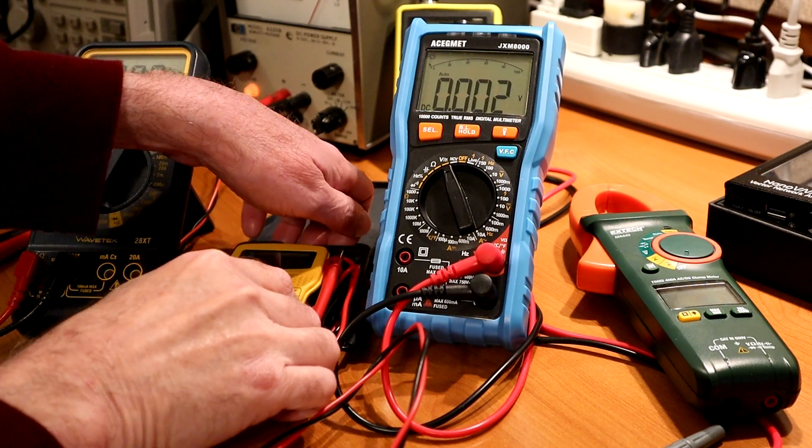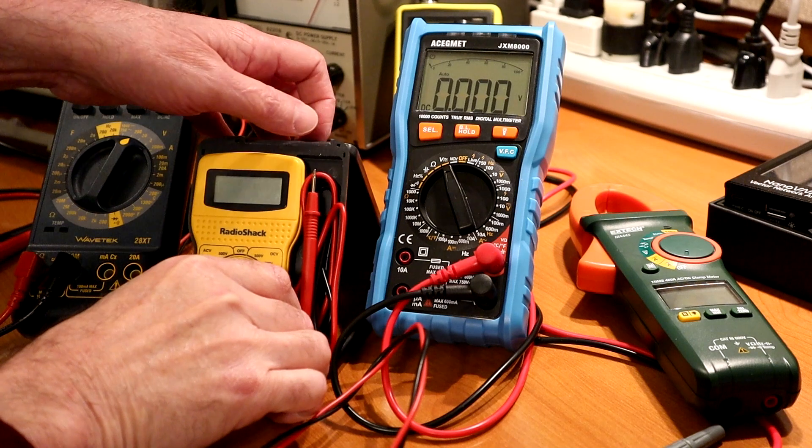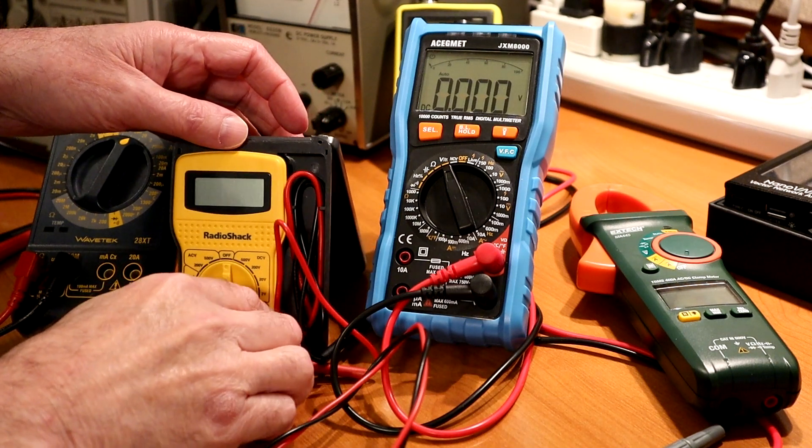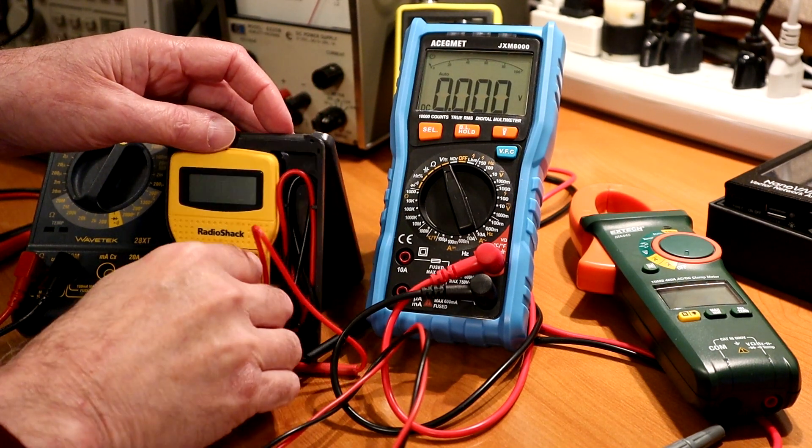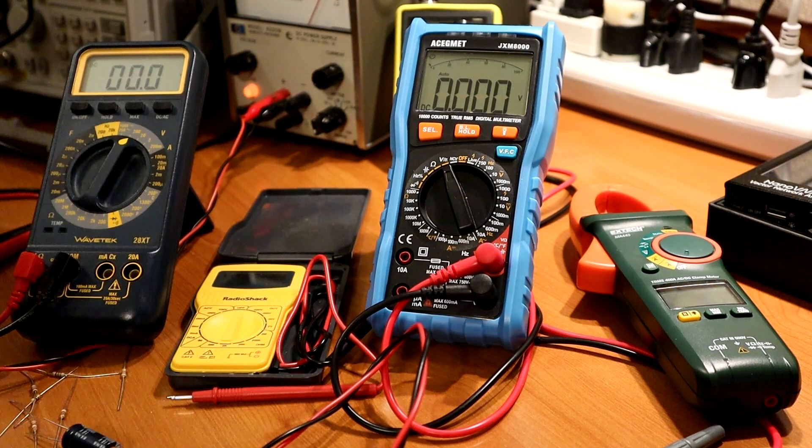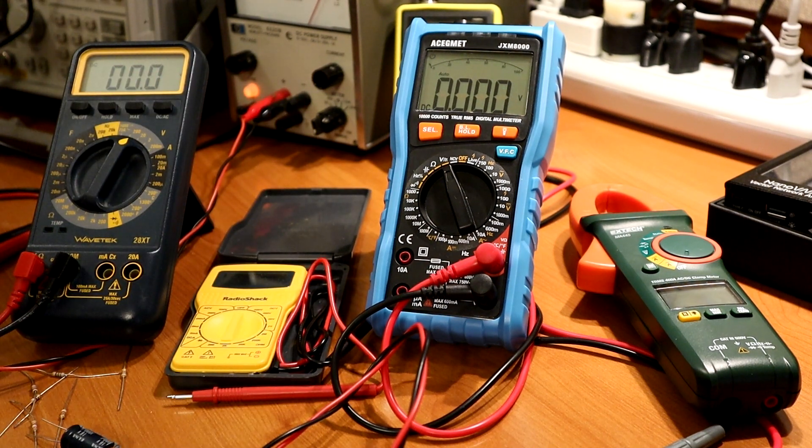Also, I have this smaller one here that I bought from Radio Shack that I kind of keep with me at all times. It's nice and small. It also has some manual ranges. A lot of multimeters these days are going to have automatic ranges.